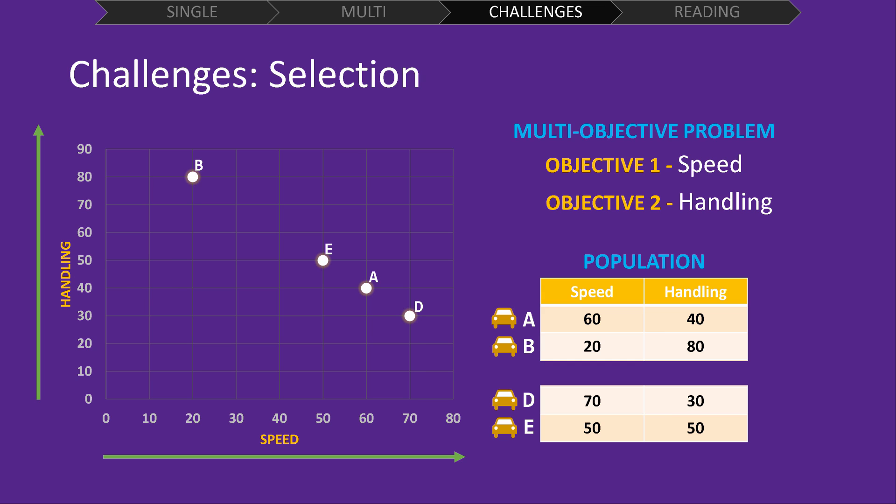However, because at least one solution dominates solution C, we can get rid of it from the population. This leaves us with four solutions.